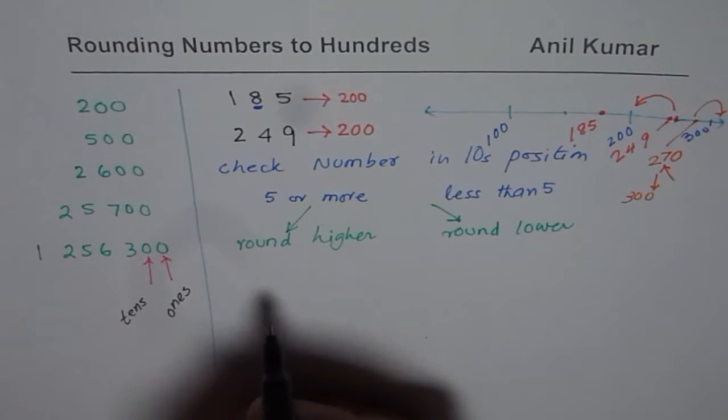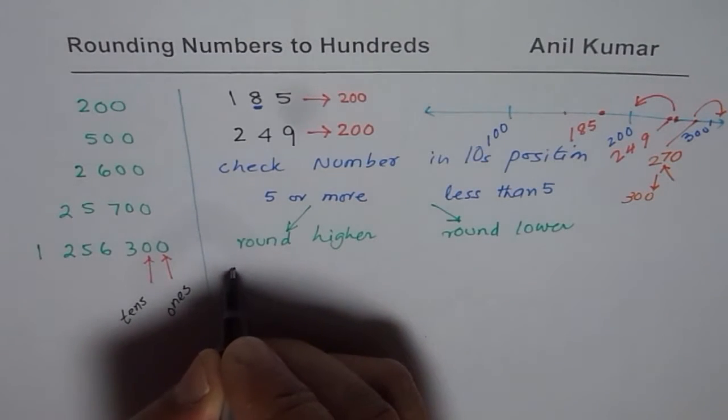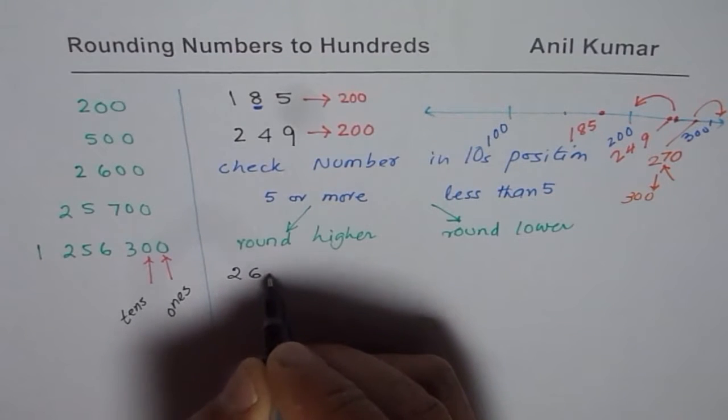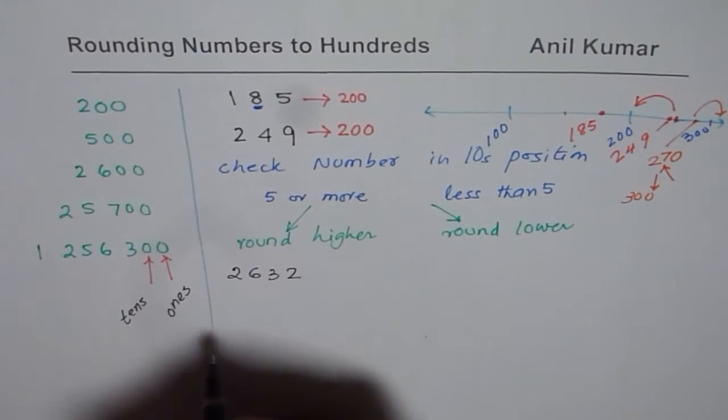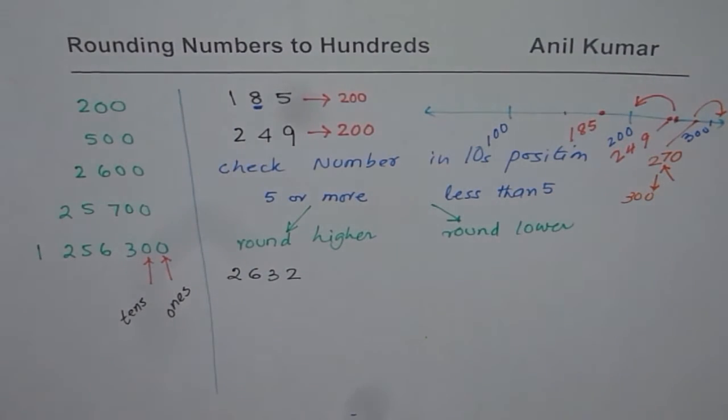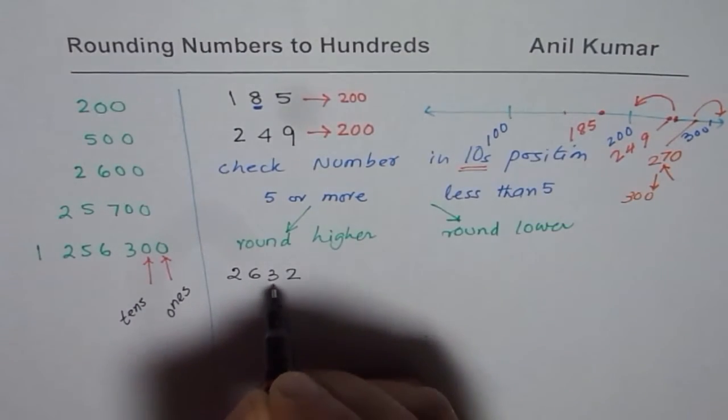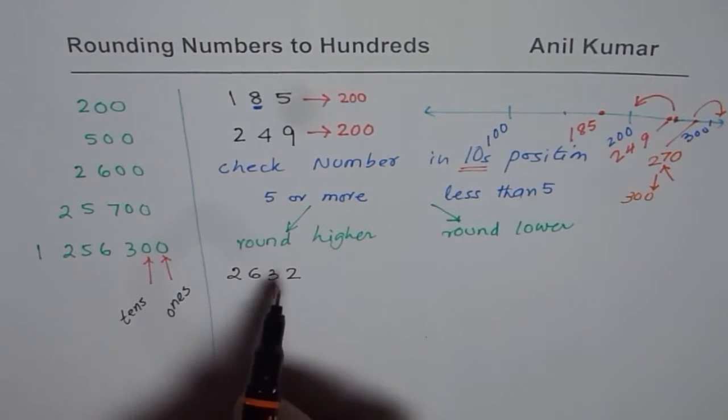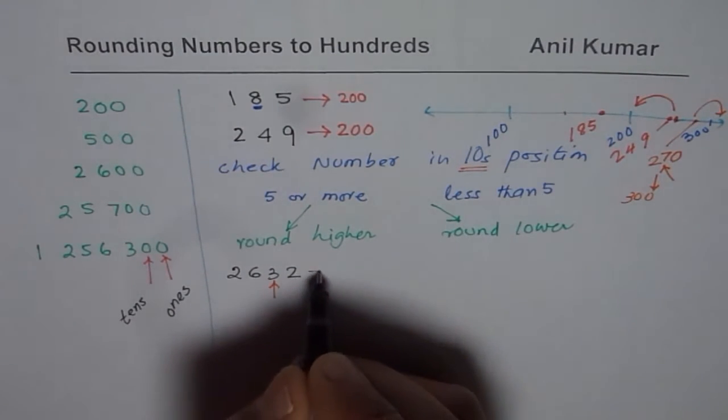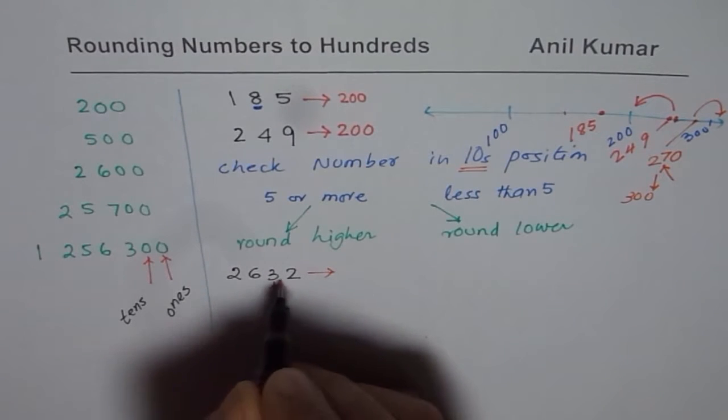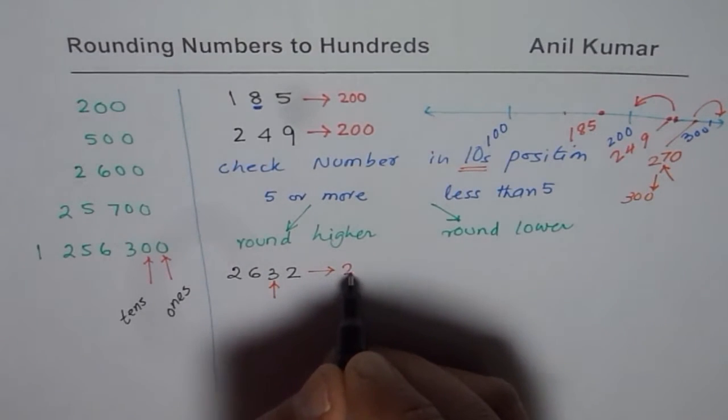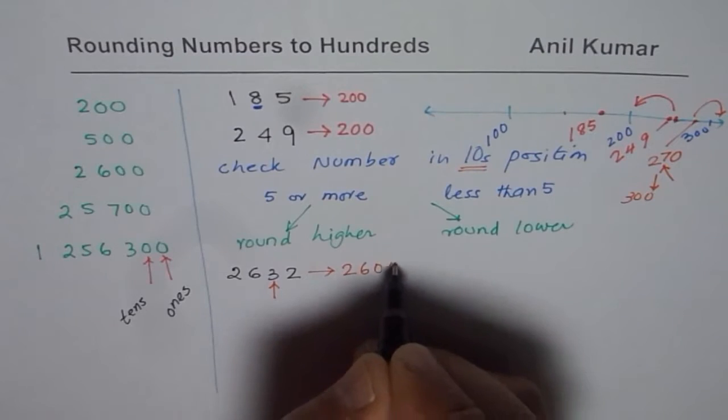Let me take a bigger number now. Let us say we have a number 2,632. Now to round this number, we will check the number at tens place. Tens place number is 3. Since it is lower than 5, it rounds lower. And so what do we get? We get 2,600.